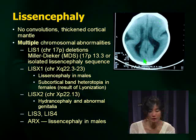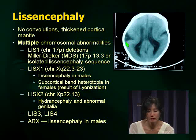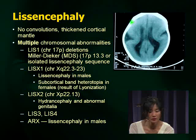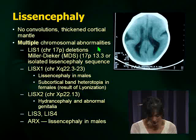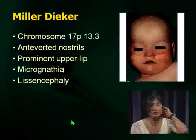As you recall from embryology, when the brain develops you have no convolutions. As the brain grows, you develop convolutions, which increases surface area. In kids with lissencephaly, there are no convolutions — you have a completely smooth brain. This leads to developmental delay and seizures because of the lack of surface area. There are multiple congenital chromosomal abnormalities associated with this. The one that's really important and likely to appear on your examination is Miller-Dieker syndrome — chromosome 17p13.3.